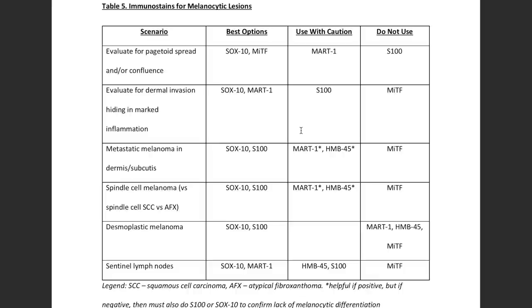I'm going to start this video using a table from my melanocytic chapter in the Dermatopathology Survival Guide, a textbook I'm writing that will be published by Innovative Pathology Press — you can follow them on Twitter and they have a website linked in the description. The book is in progress and we expect it sometime in 2019. This table represents my basic approach to melanocytic immunostains and my personal opinions on which ones are best for which situation.